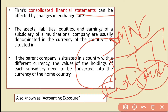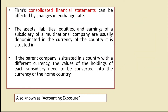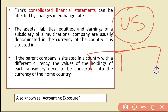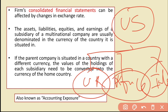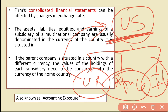A firm's consolidated financial statements can be affected by changes in the exchange rate. For example, suppose there is an MNC that operates in the US as the parent company, with subsidiaries in the UK, Africa, and India. The subsidiaries' financial statements are in their own home currency, but when consolidated, all statements are converted into the parent company's currency. Any fluctuation in the exchange rate is known as translation exposure.